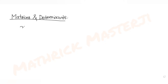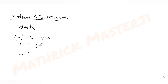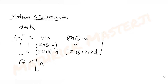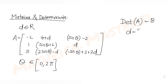The question tells us: let D belong to R (real numbers) and the matrix A is given as: first column entries -2, 1, 5; second column entries 4+D, sinθ+2, 2sinθ-D; third column entries sinθ-2, D, and -sinθ+2+2D. Here θ belongs to [0, 2π]. If the minimum value of the determinant of A is 8, find the value of D.